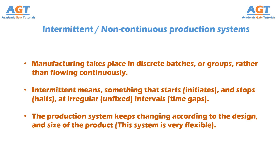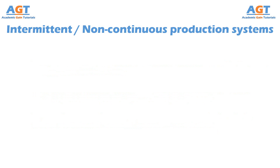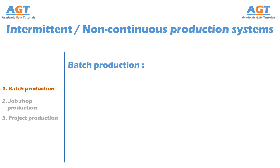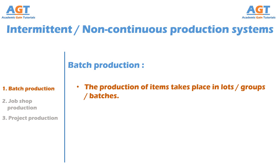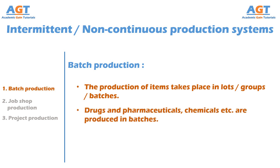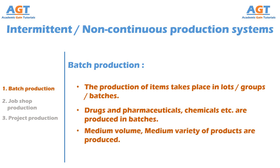The non-continuous or intermittent production systems can be broadly classified into three types: number one, batch production; number two, job shop production; and number three, project production. In batch production, the production of items takes place in lots, or groups, or batches. All the jobs of one batch must be completed before starting the next batch. Examples of batch production include manufacturing of drugs, pharmaceuticals, and chemicals. Medium-sized batches of similar products are made batch by batch — production of one batch ends in a single run of the machine, then the next batch goes into the production line when the previous batch has exited.